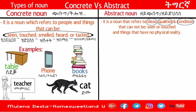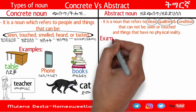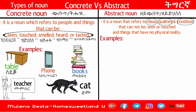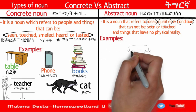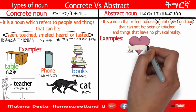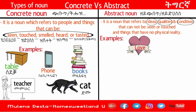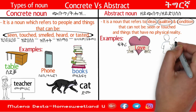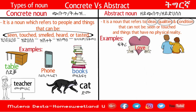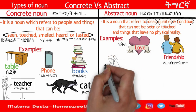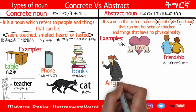As an example, we have love, friendship, anger, and happiness. These are examples of abstract nouns.